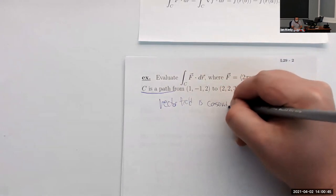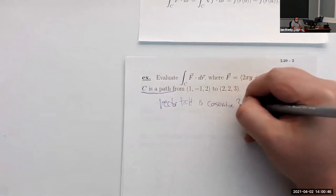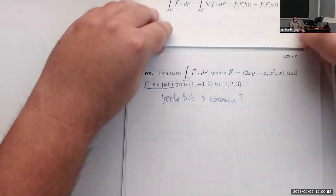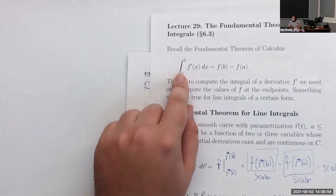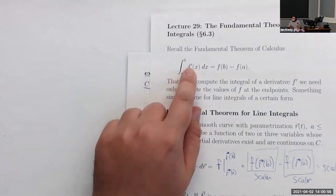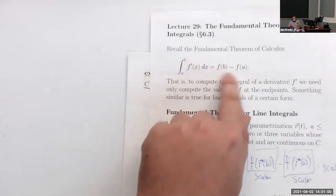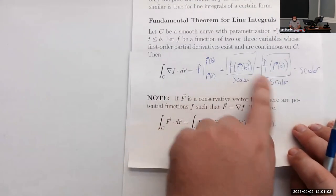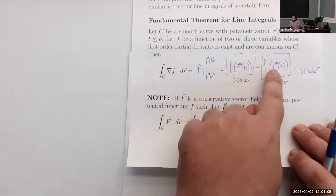We need this to be conservative so we can use the fundamental theorem for line integrals, because that only cares about the endpoints — just like how the original fundamental theorem of calculus only depends on endpoints a and b. Our new fundamental theorem also only depends on the endpoints.